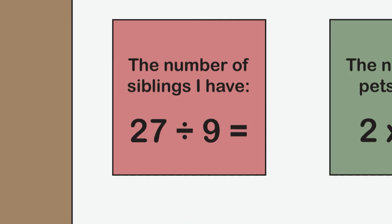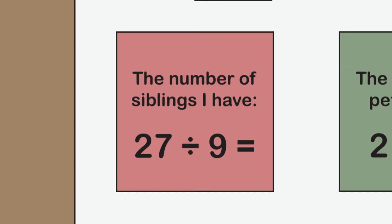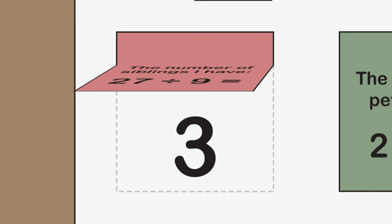For example one of the clues might be the number of siblings I have which might be represented by the number sentence 27 divided by 9. The answer 3 is written underneath the sticky note.